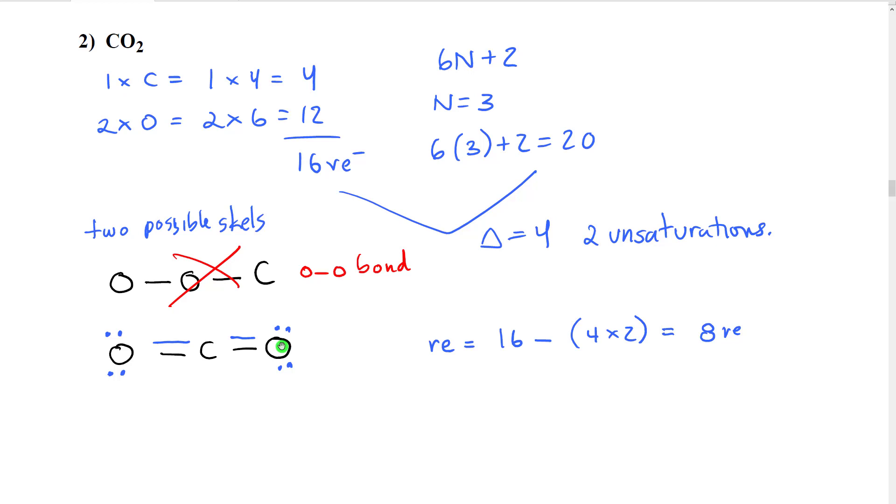We're going to see that that actually is, to some extent, a valid structure. But it represents a resonant structure and a different way of sharing electrons. At any rate, starting going from this structure then, we would do our remaining electrons.